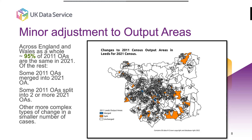Within that 5% there have been different kinds of change. Some 2011 output areas have merged to form 2021 output areas, and some have split into two or more. Here we can see the Leeds example: in blue are the 2011 output areas that have been merged together to create a single 2021 output area, and in orange where a 2011 output area has split into two or more parts. Splitting happens where population density has massively increased and the output area is now too large in population terms. Merging occurs where there has been a population decrease, requiring areas to be joined to maintain the minimum population level.